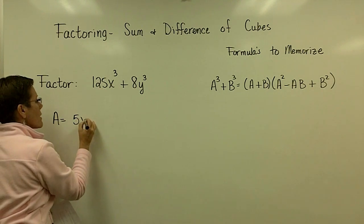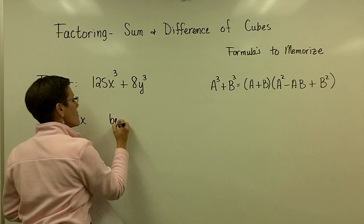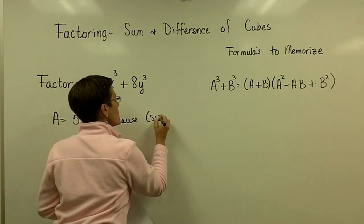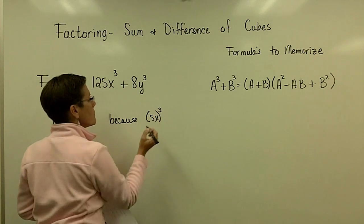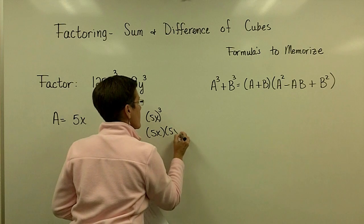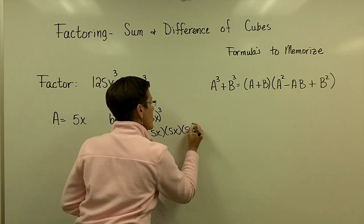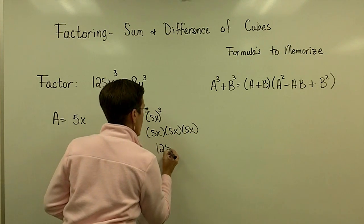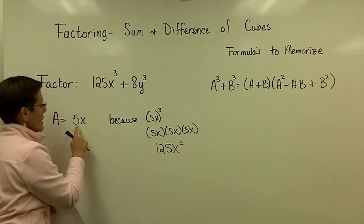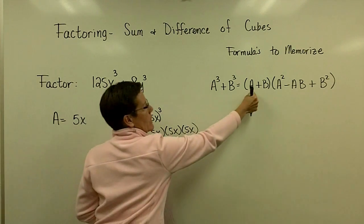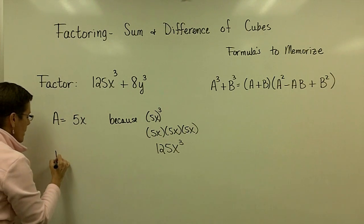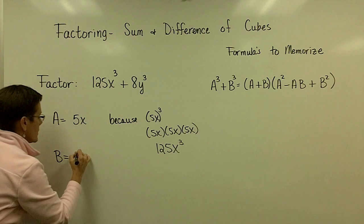For this, it's 5x, and that's because 5x to the third power means 5x times 5x times 5x, which is 125x cubed. So that's why this represents A, and I'll be putting in a 5x right there.